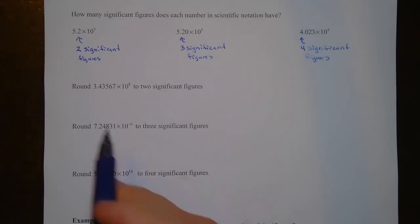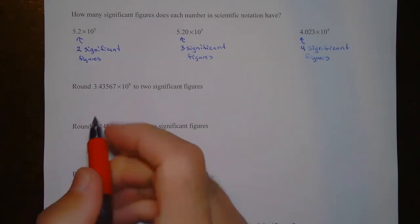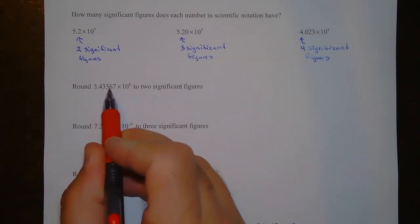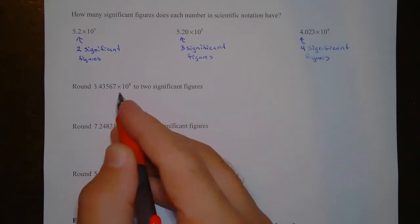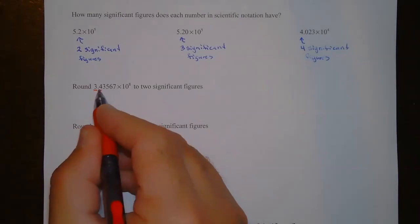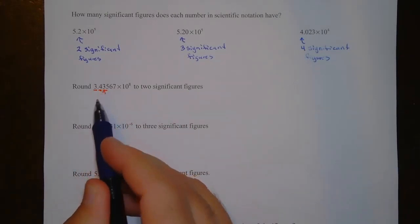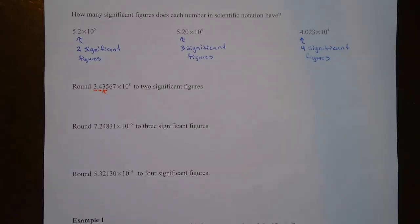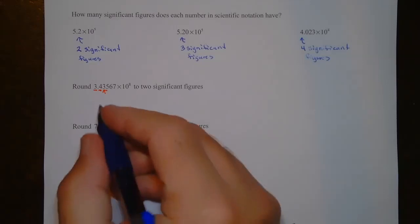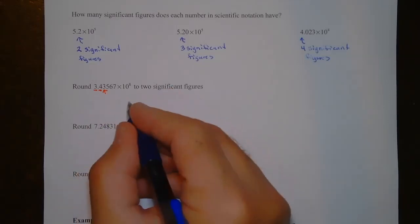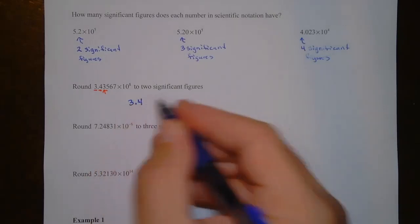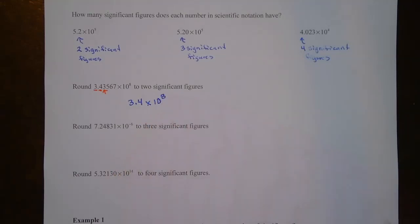Now let's talk about rounding to two significant figures. This number in scientific notation has one, two, three, four, five, six significant figures. We want to round to two, so here's one, here's two, and I look at the third position to determine rounding. If that digit is 0–4, the number stays the same; if it's 5–9, we round up. So this number rounds to 3.4 times 10 to the 8th — that's two significant figures.